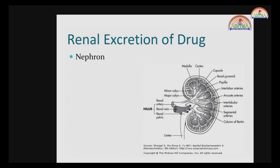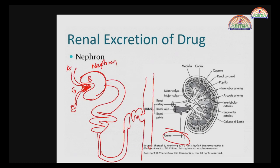Looking at the structure of the nephron: we have the glomerulus, and this cup-shaped structure is Bowman's capsule. Inside the cup-shaped Bowman's capsule, we have a network or tuft of capillaries called the glomerulus. The vessel entering this tuft of capillaries is called the afferent arteriole, and the one coming out is called the efferent arteriole. The glomerulus and Bowman's capsule together are called the Malpighian capsule. Glomerular filtration takes place in this tuft of capillaries.